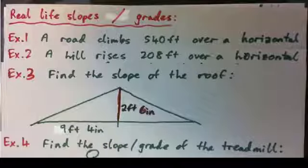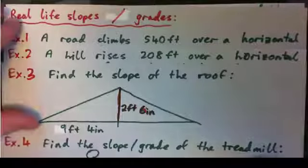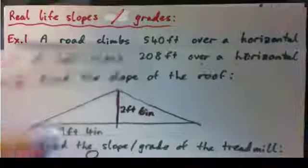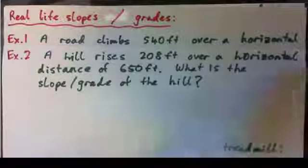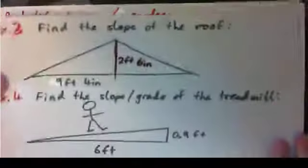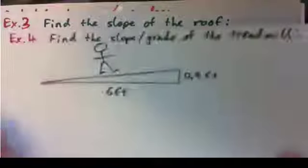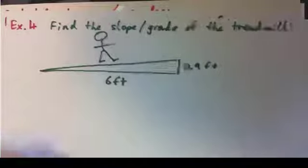In this video we are going to look at a few real life examples of slopes and grades. We will do example 1, example 2, example 3 — slope of a roof — and example 4, slope of a treadmill.